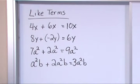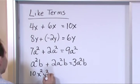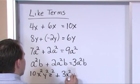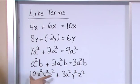One final example just to show you how crazy this can get. What if I had 10 times x squared times y squared times z squared plus 3 times x squared times y squared times z squared. See this term here as far as the variables go, I have...